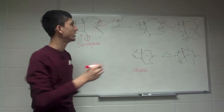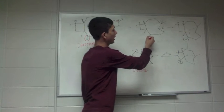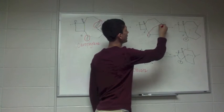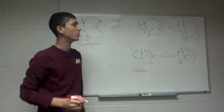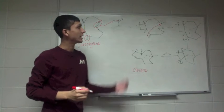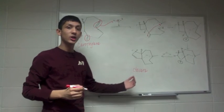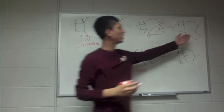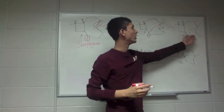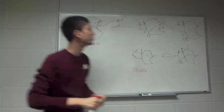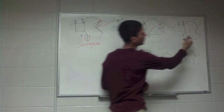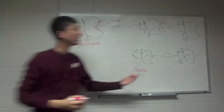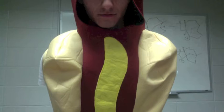Now an intramolecular reaction happens, and the electrons from the double bond form a bridgehead. In this case they're attacking from behind, so we have a wedged bridgehead. Then the carbocation forms here again, and the other anomer also forms.